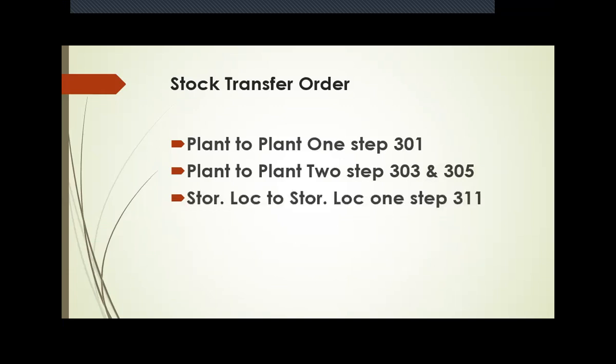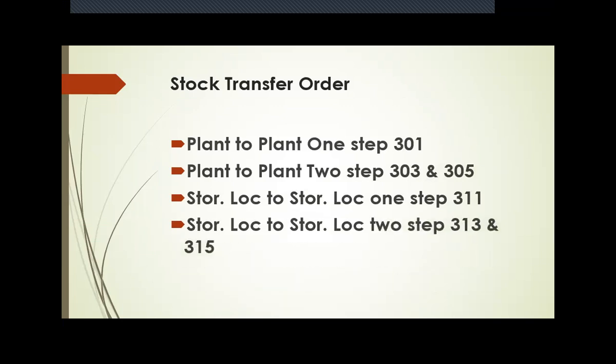Storage location to storage location, one step procedure is 311. Storage location to storage location, two step procedure is 313 and 315. For the two step, it will be stock in transit. Once you do 303 between plant to plant, it will be stock in transit, and in 305 you will receive the stock. Same applies for storage location to storage location.